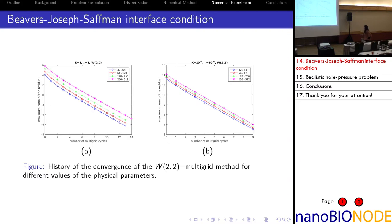Additionally, I show the convergence history for this test. We use a W-cycle with two pre- and two post-smoothing steps. The convergence performance of multigrid is independent of mesh size, and it takes only around 13 iterations to reach the stopping criterion — a reduction of the initial residual by a factor of 10^{-10} — which is very efficient. Furthermore, we investigate the robustness of our method over a wide range of coefficients, which is important since in geoscientific applications such parameters are typically very small.